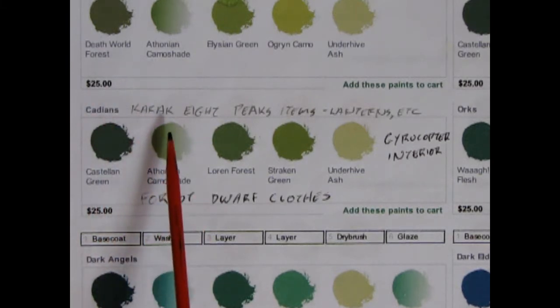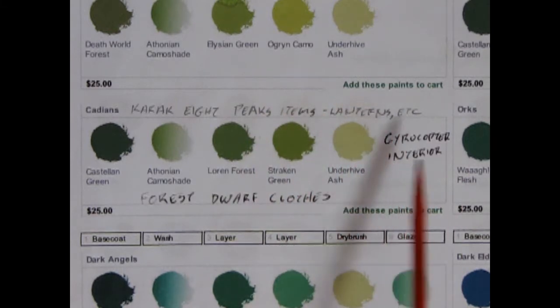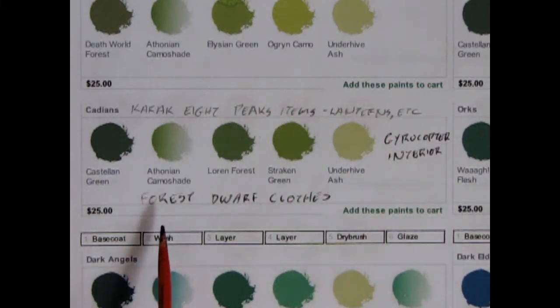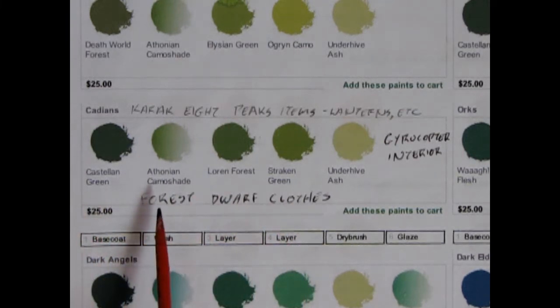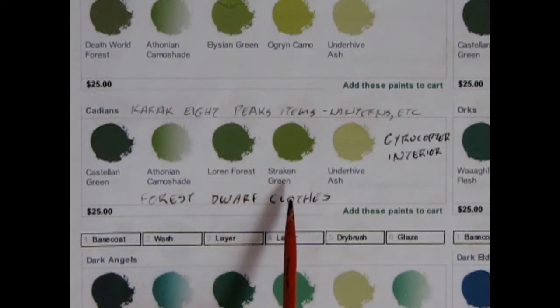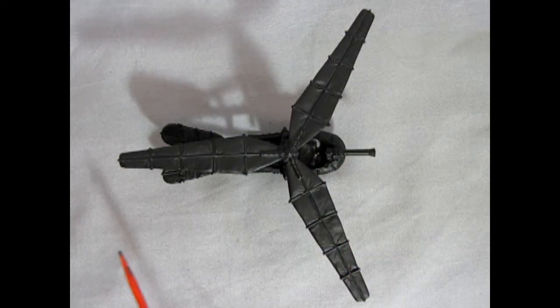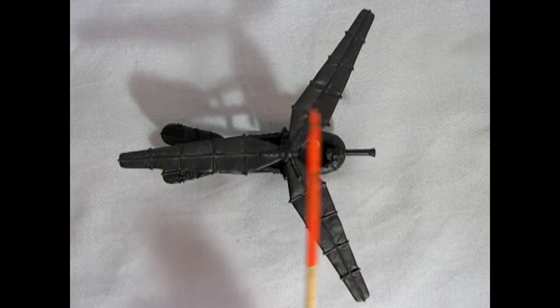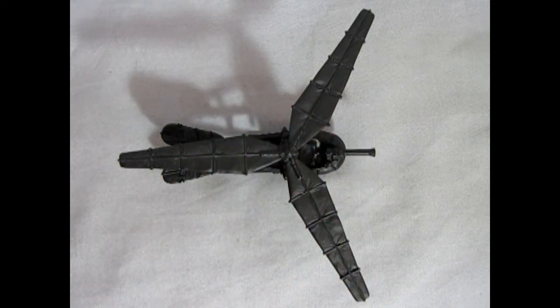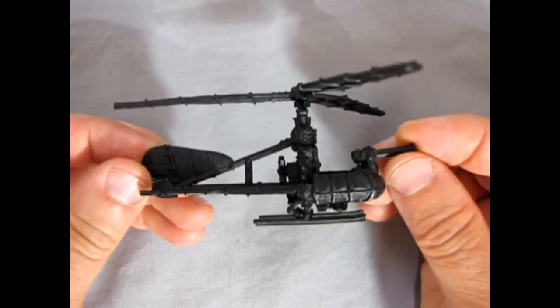However, I'm also using these colors as Karak Eight Peaks items, like lanterns, the interior of the gyrocopter, and for my Forest Dwarf Army, these were the colors of the clothes. So like Castilian Green, Alothian Camo Shade, Lauren Forest, Strachan Green, and Underhive Ash as the dry brush. Now that we know what the colors are based off of that sheet, I can now begin to paint my original gyrocopter model in the same colors to match.